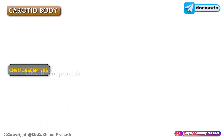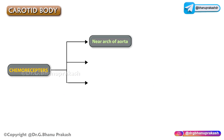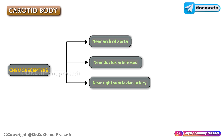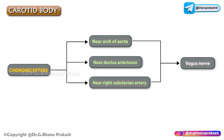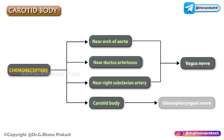There are other allied chemoreceptors which are found near the arch of the aorta, the ductus arteriosus, as well as the right subclavian artery, and all these are supplied by the vagus nerve, while the carotid body is supplied by the glossopharyngeal nerve.